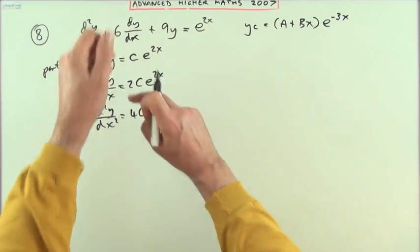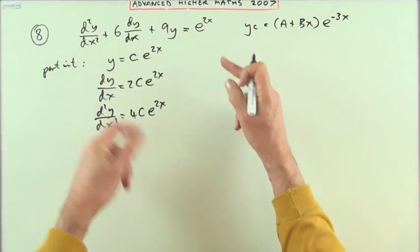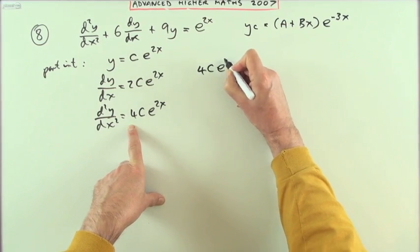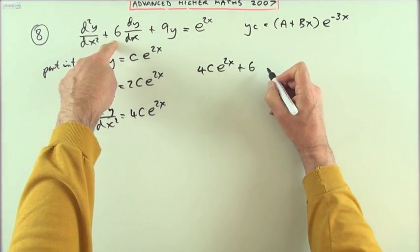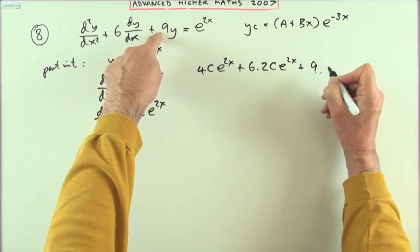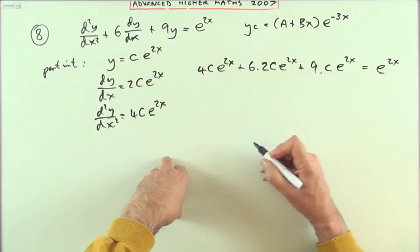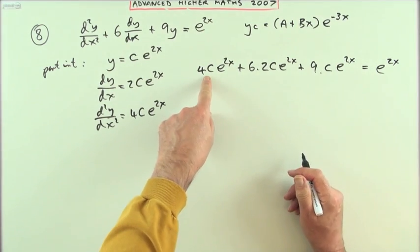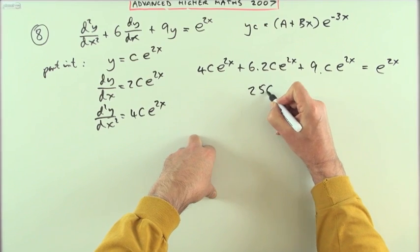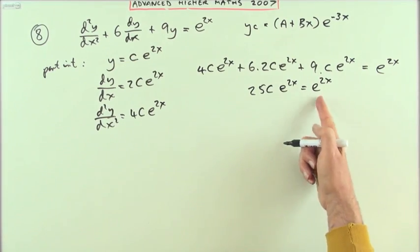Then gather these up according to those numbers. I'll have one of them, six of them, and nine of them. Without writing it again, I've got 4c·e^(2x) + 6 times 2c·e^(2x) + 9 times c·e^(2x), and that lot should come to e^(2x). Adding this up: 4c + 12c + 9c = 25c. So 25c·e^(2x) = e^(2x).